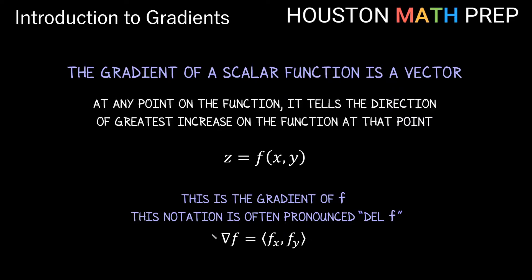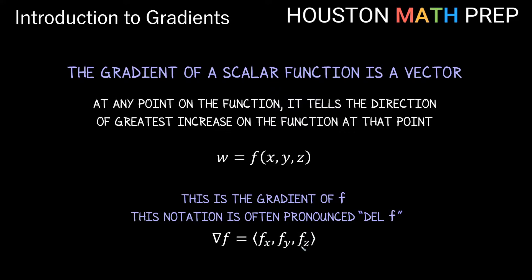It takes a surface in space and outputs a vector formula for the direction of greatest increase. That vector has the x-component as the partial derivative of f with respect to x, and the y-component as the partial derivative with respect to y. If we're dealing with a function of three variables, the gradient will still be a vector function, only with three components — the final one being the partial derivative of f with respect to z.